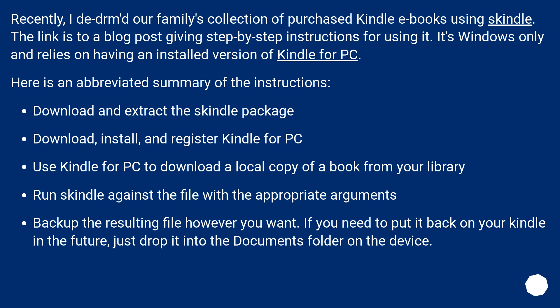Download and extract the Skindle package. Download, install, and register Kindle for PC. Use Kindle for PC to download a local copy of a book from your library. Run Skindle against the file with the appropriate arguments. Back up the resulting file however you want. If you need to put it back on your Kindle in the future, just drop it into the Documents folder on the device.